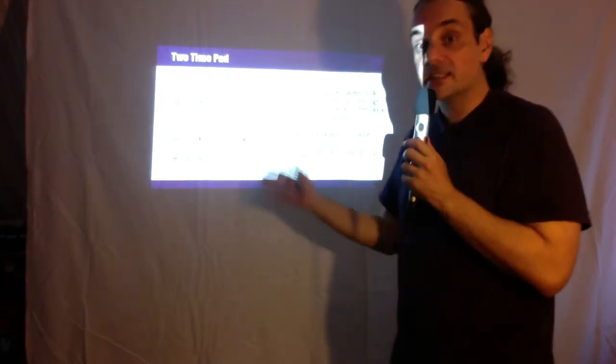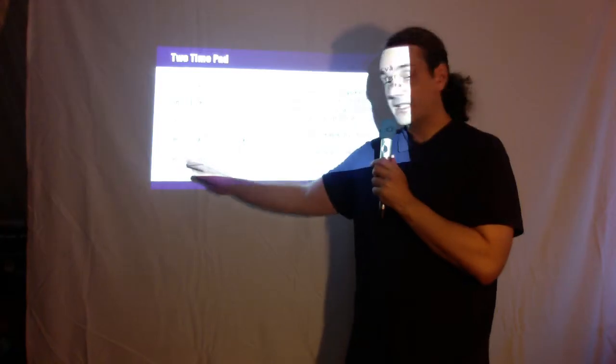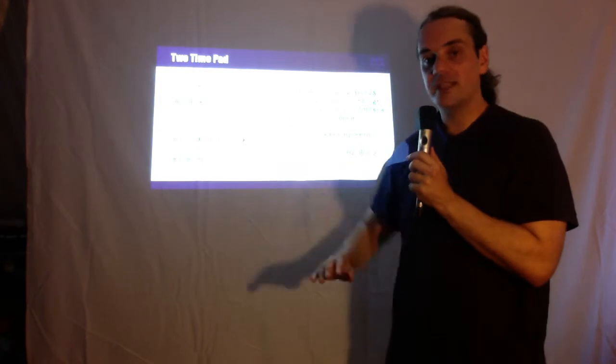But if Alice and Bob don't know much about encryption and accidentally send two messages with the same key, then suddenly instead of impossible, it becomes very easy for Eva to figure out both messages. Alice sends first M1 XOR K as cryptotext C1, then M2 XOR K with the same key K as C2. If Eva takes C1 XOR C2, C1 is M1 XOR K, they XOR each other, K and K cancel out leaving only M1 XOR M2.